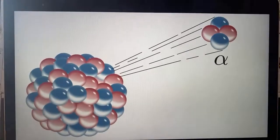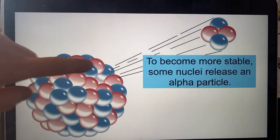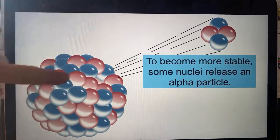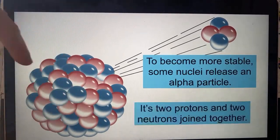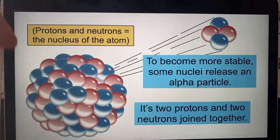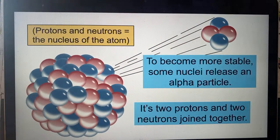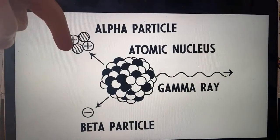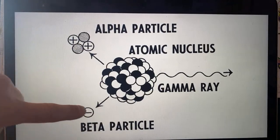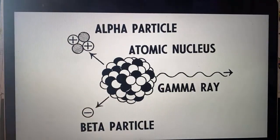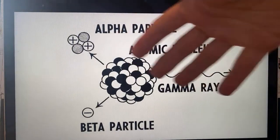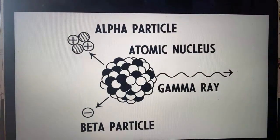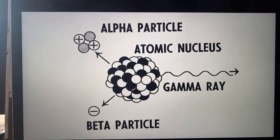One thing an unstable nucleus can release is called an alpha particle — two protons and two neutrons joined together, moving very fast. There are other types of radiation too: beta particles, which are electrons, and gamma rays or X-rays — another type of ray that comes out of a nucleus. So they knew these rays existed, but they didn't know what they were.